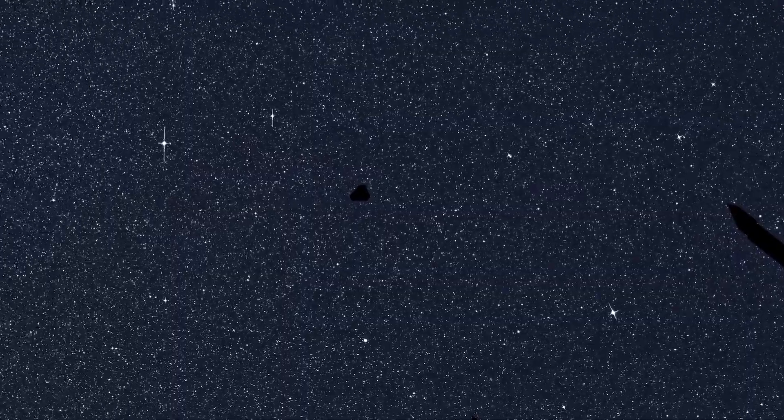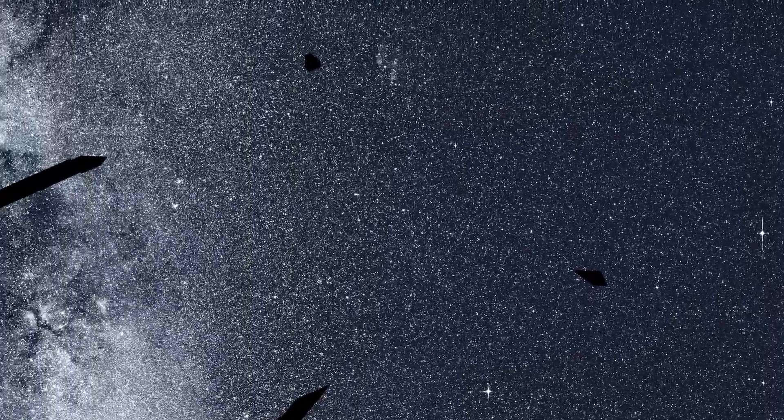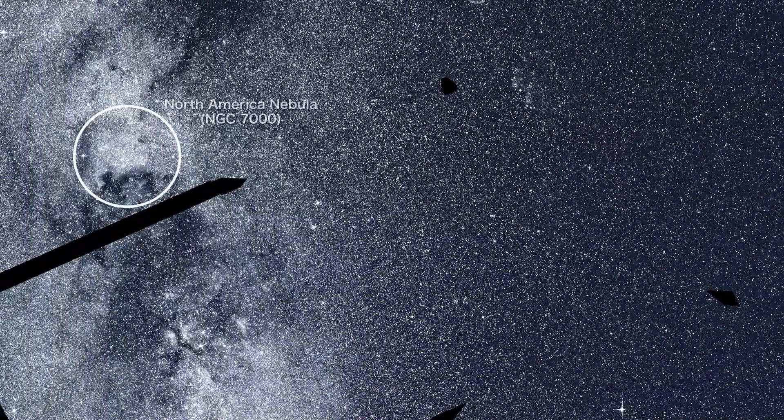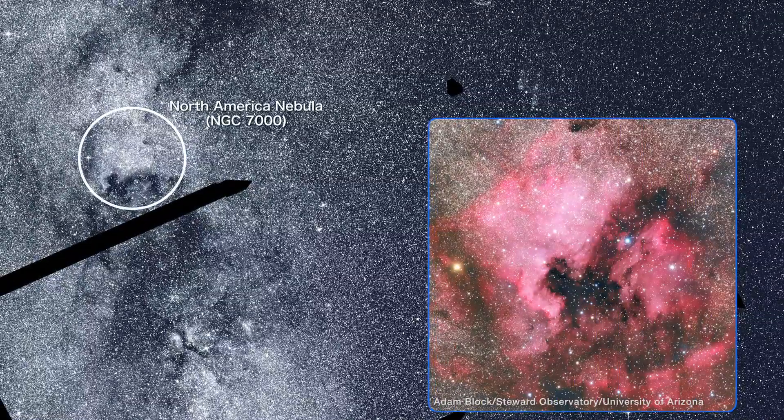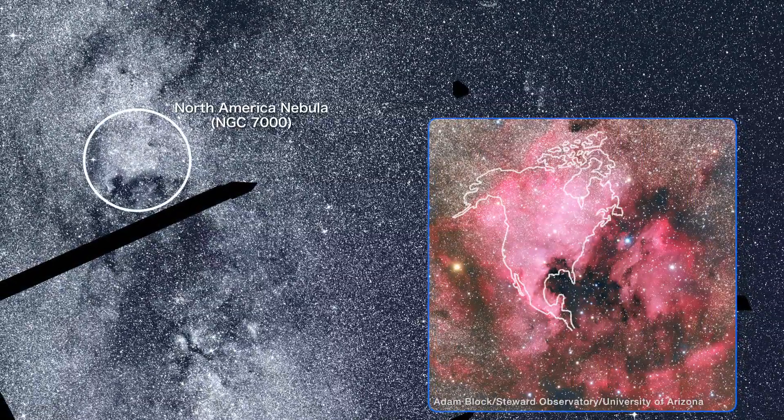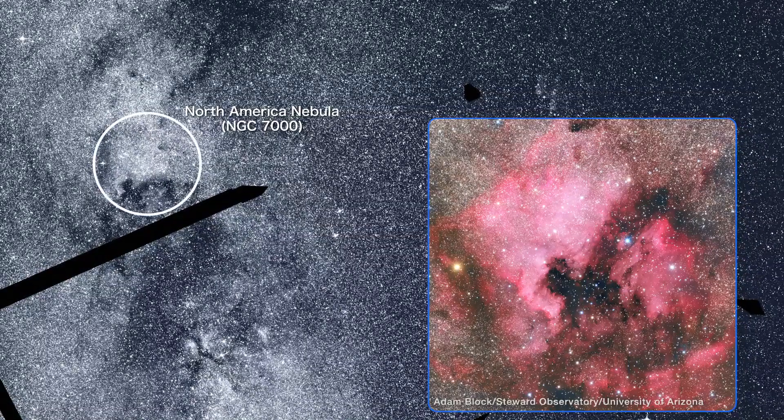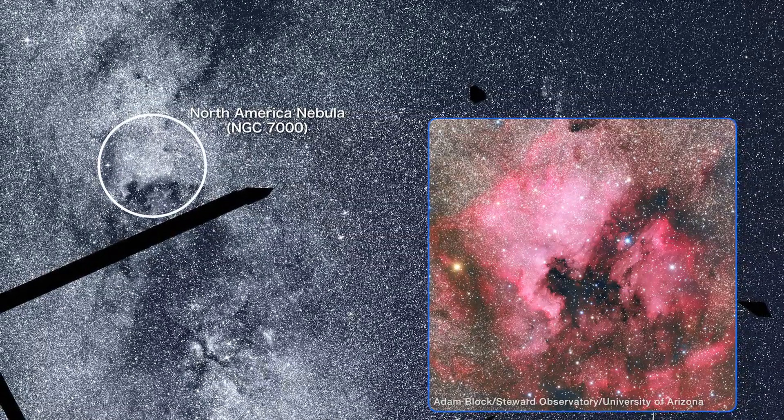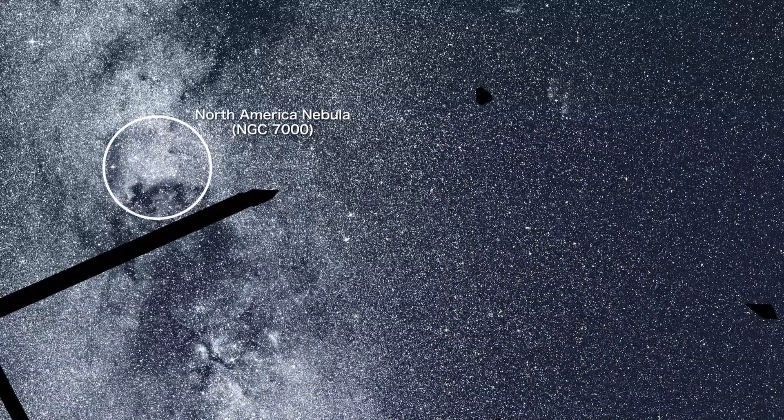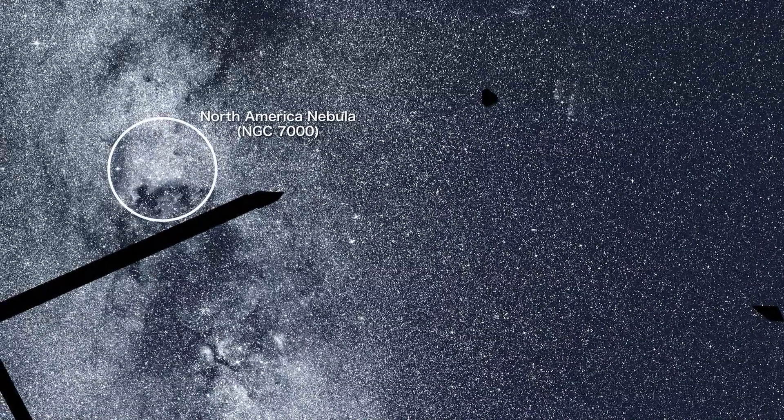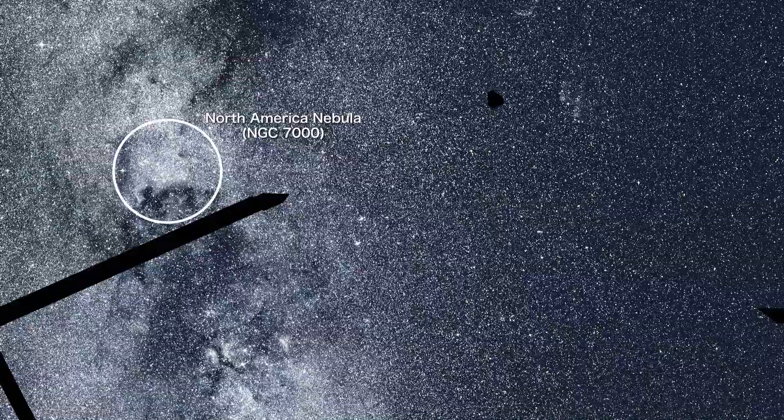New stars form in gas-rich clouds throughout our galaxy. The North America Nebula, named for its resemblance to the continent, is a prominent example. Located about 1,700 light-years away in the constellation Cygnus, it's part of a vast factory complex with enough gas to make 100,000 sun-like stars.